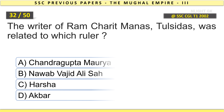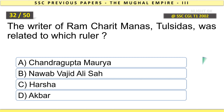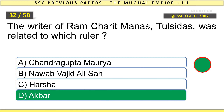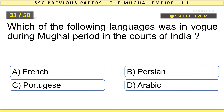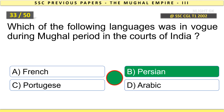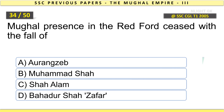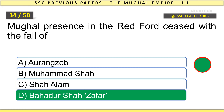The writer of Ram Charit Manas, Tulsidas, was related to which ruler? Akbar. Which of the following languages was in vogue during the Mughal period in the courts of India? Mughal presence in the Red Fort ceased with the fall of Bahadur Shah Zafar.